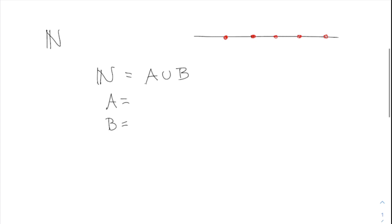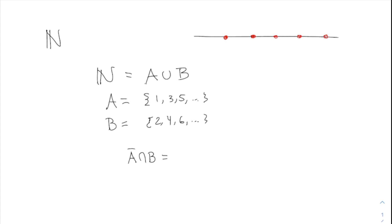There are many ways to do this with N — you need two sets that cover all natural numbers but are separate from each other. Evens and odds works: let A be {1, 3, 5, ...} and B be {2, 4, 6, ...}. Certainly N equals A union B. Now what about A-bar intersect B? A-bar is the closure of A — you take all points of A plus any limit points.